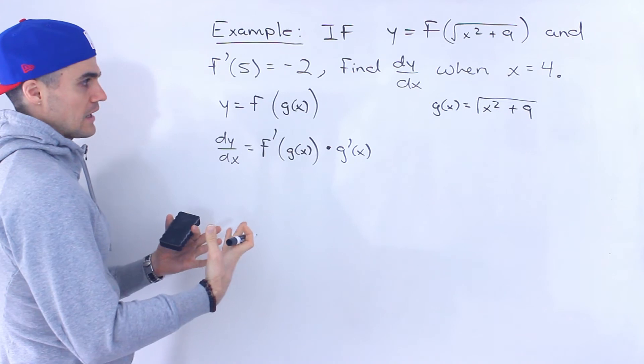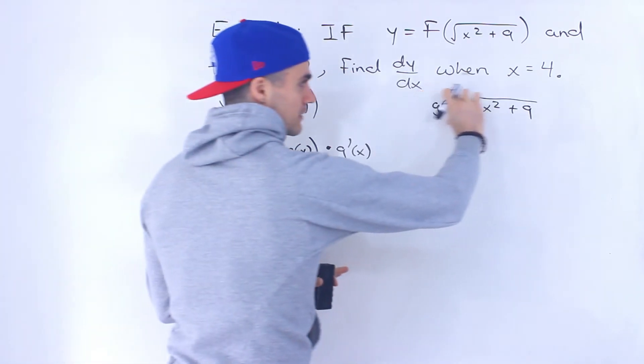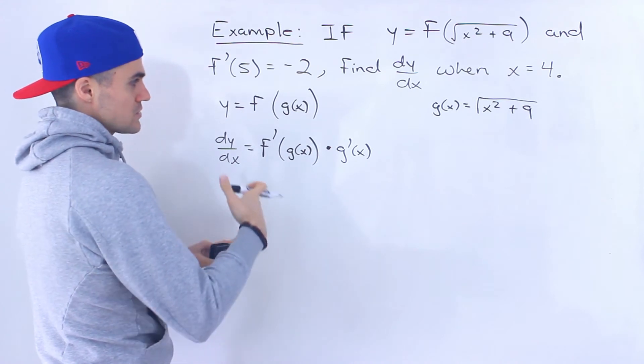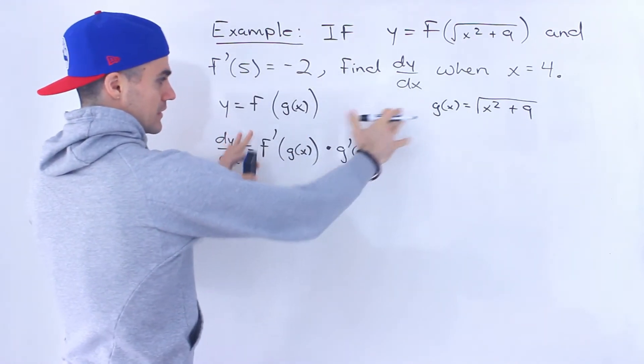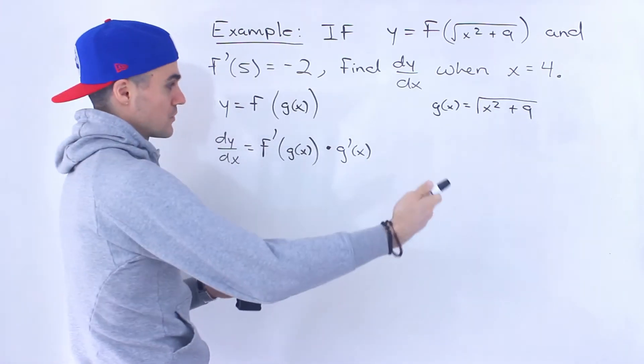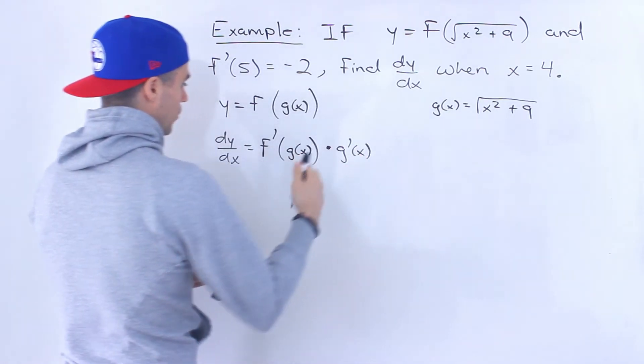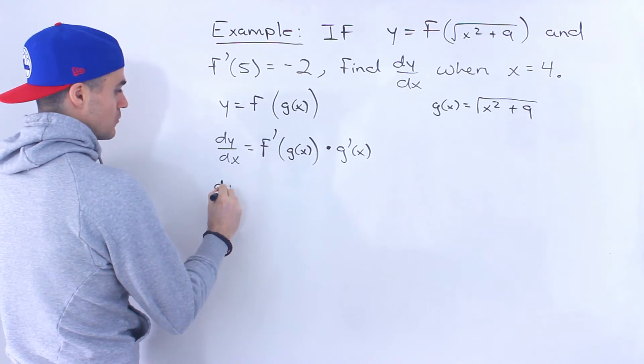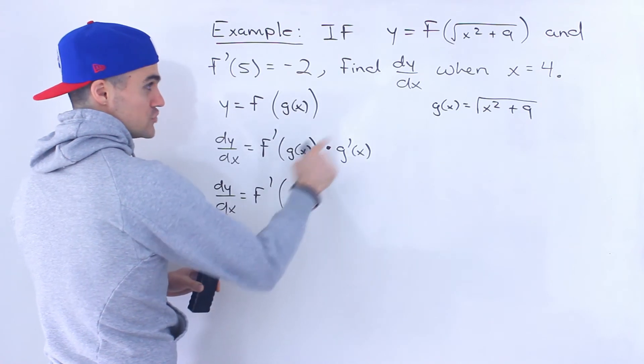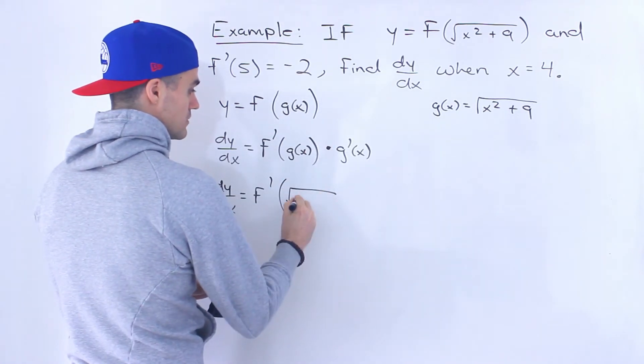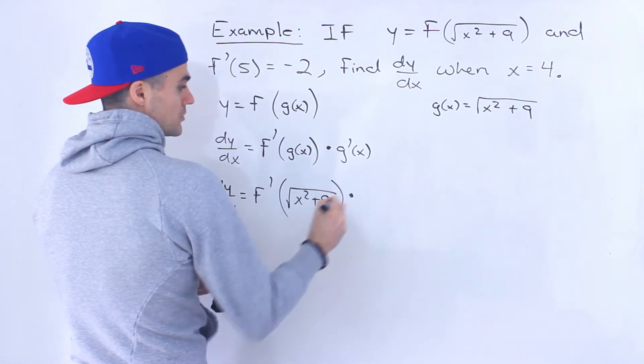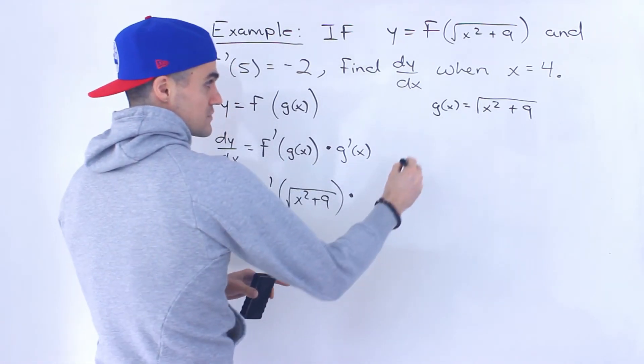And now what we can do is we can bring back this function g of x and plug it in here. So I just feel like doing this step allowed us to see what the step was when we took the derivative and now we can incorporate it back in. So basically dy by dx is going to equal f prime of g of x, that same function, x squared plus 9, the square root of x squared plus 9. But now we're gonna have to multiply it by the derivative of this function.